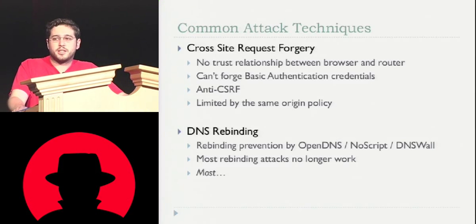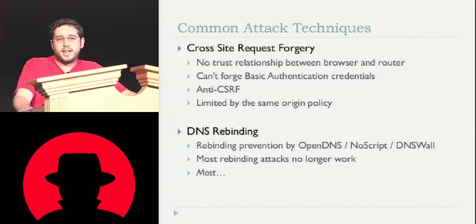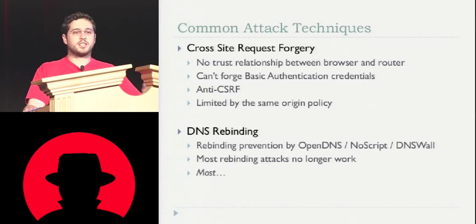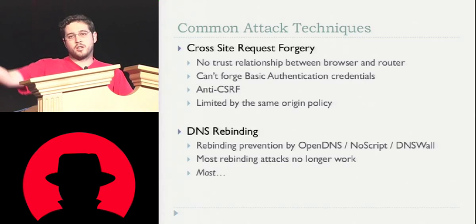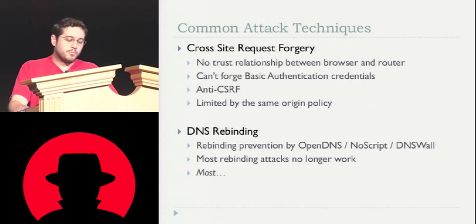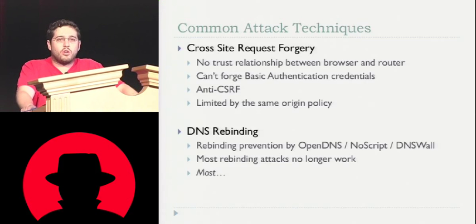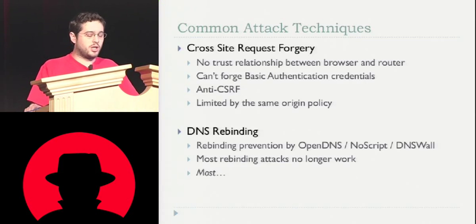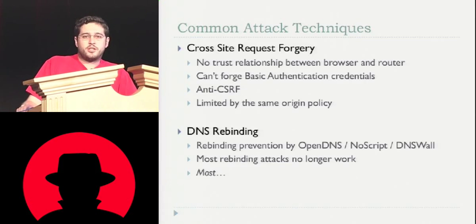The premise behind DNS rebinding is basically: if the browser is going to implement security based on the domain name, that's fine — just tell it that attacker.com has switched IP addresses to 192.168.1.1. So now when the attacker's JavaScript connects back to attacker.com, the request actually goes to your router. But DNS rebinding has been around for a long, long time — it's like 1996 called and wants this exploit back. It's been around forever, and so people have put in preventions to try to stop it.